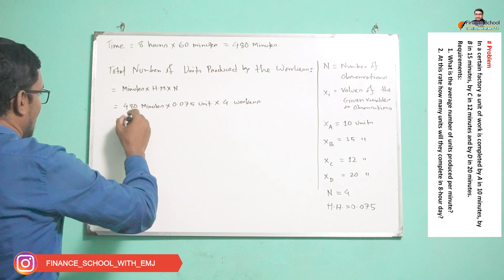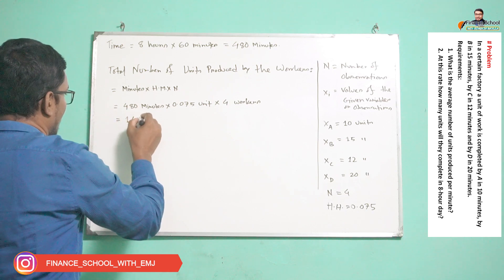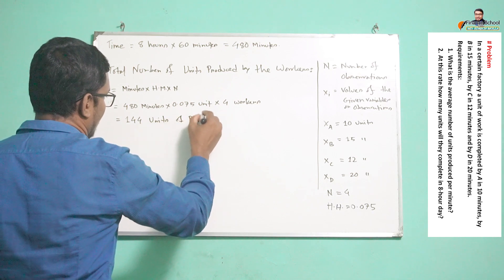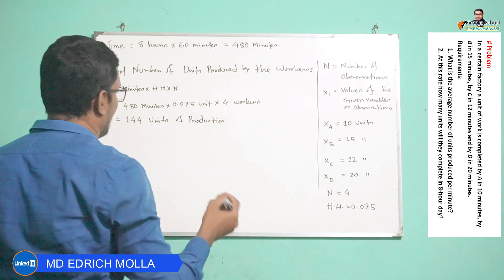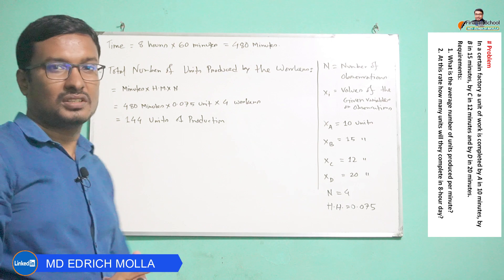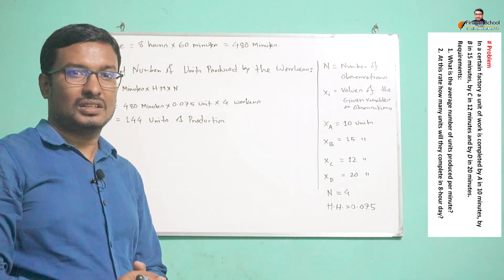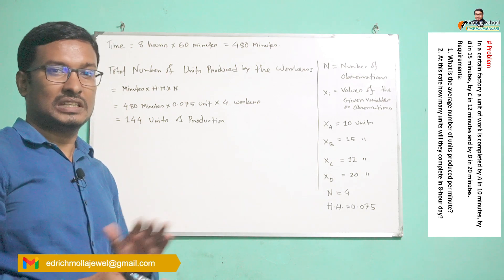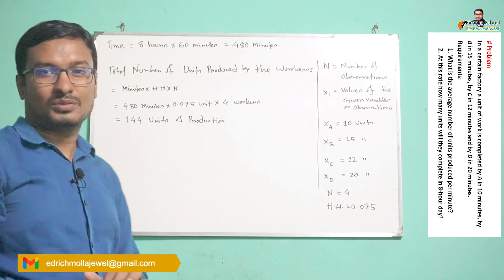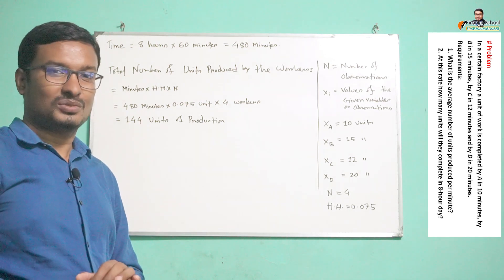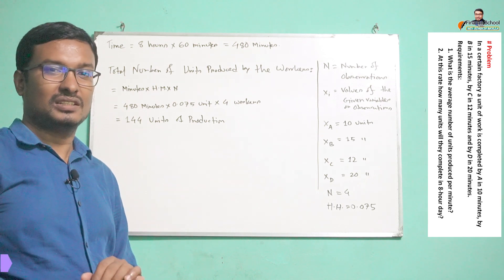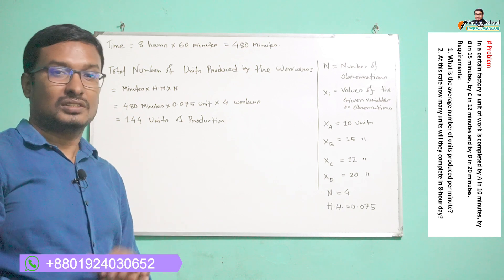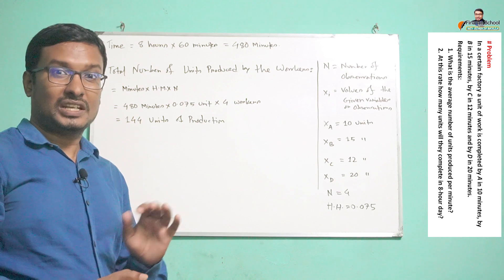Multiplying all of them together we get 144 units of production by all 4 workers. So 144 units would be the production by 4 workers working 8 hours a day. This is the computation of the two different requirements — first the average unit produced by the workers per minute, and then the number of units produced by the 4 workers in 8 hours.